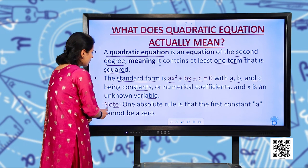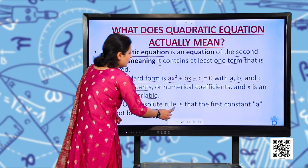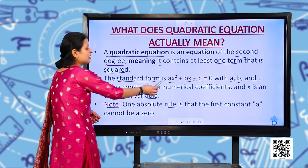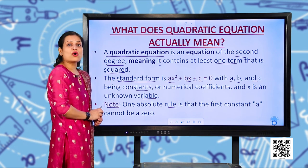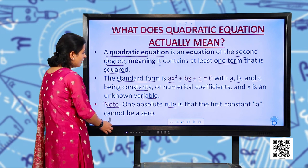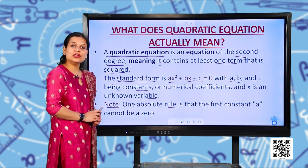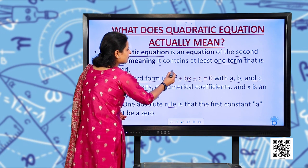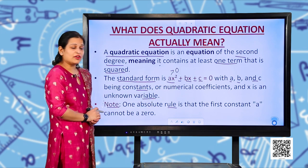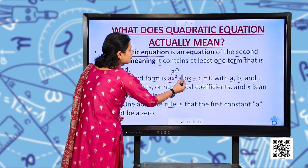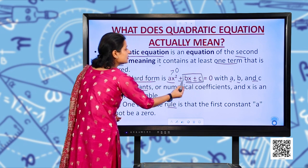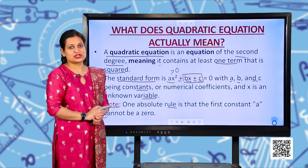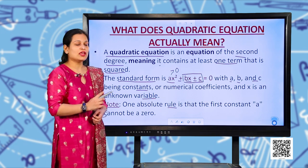Here there is a rule: the first constant A, the coefficient of x², cannot be 0. If A becomes 0, you are left with Bx + C, and this will become a linear equation, not a quadratic equation.